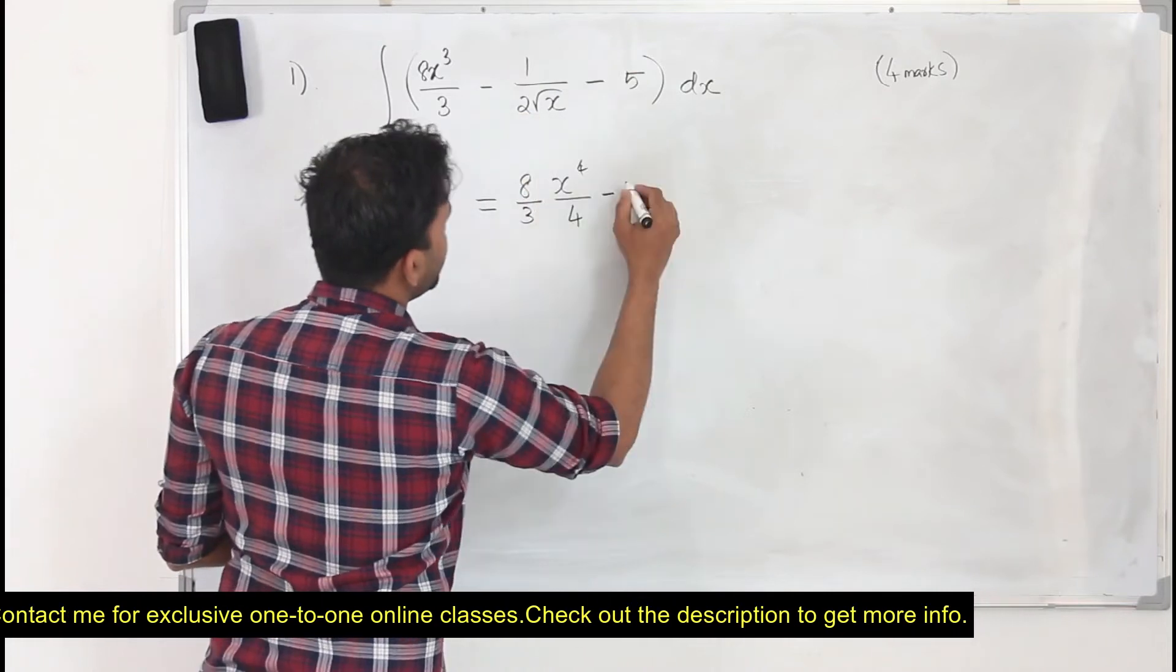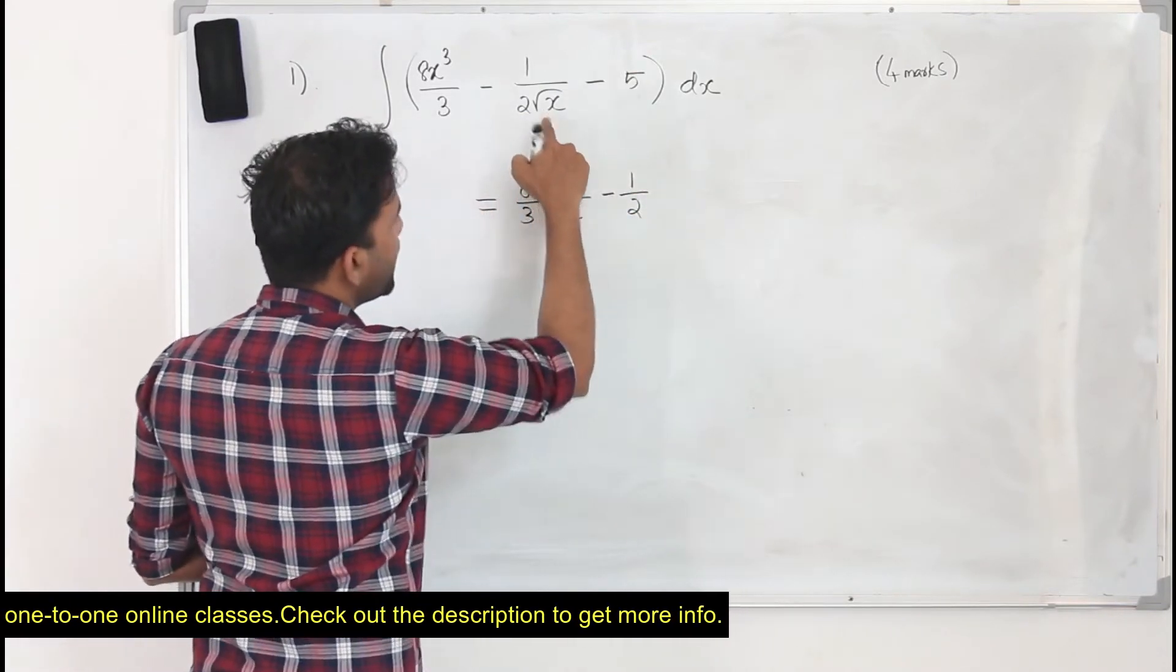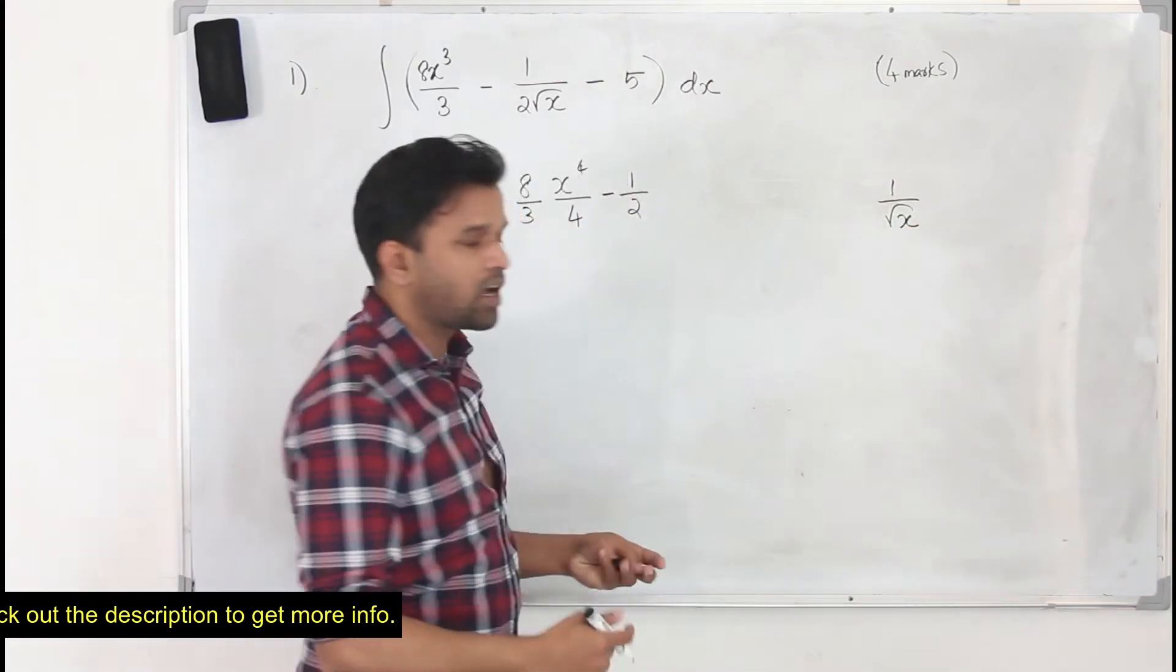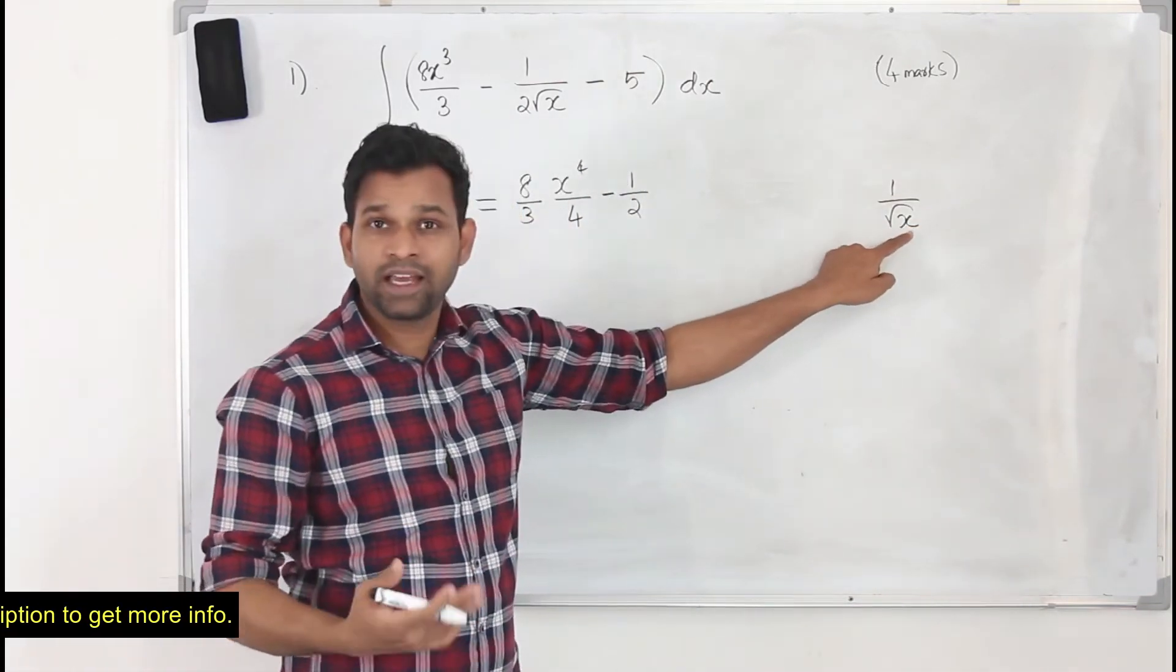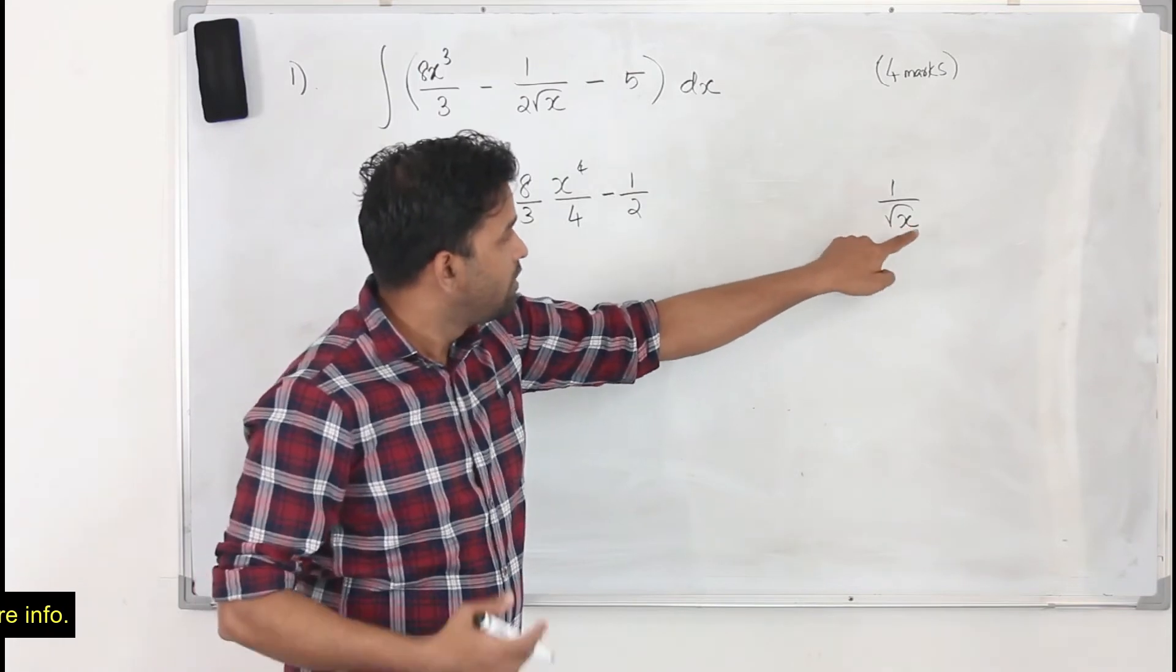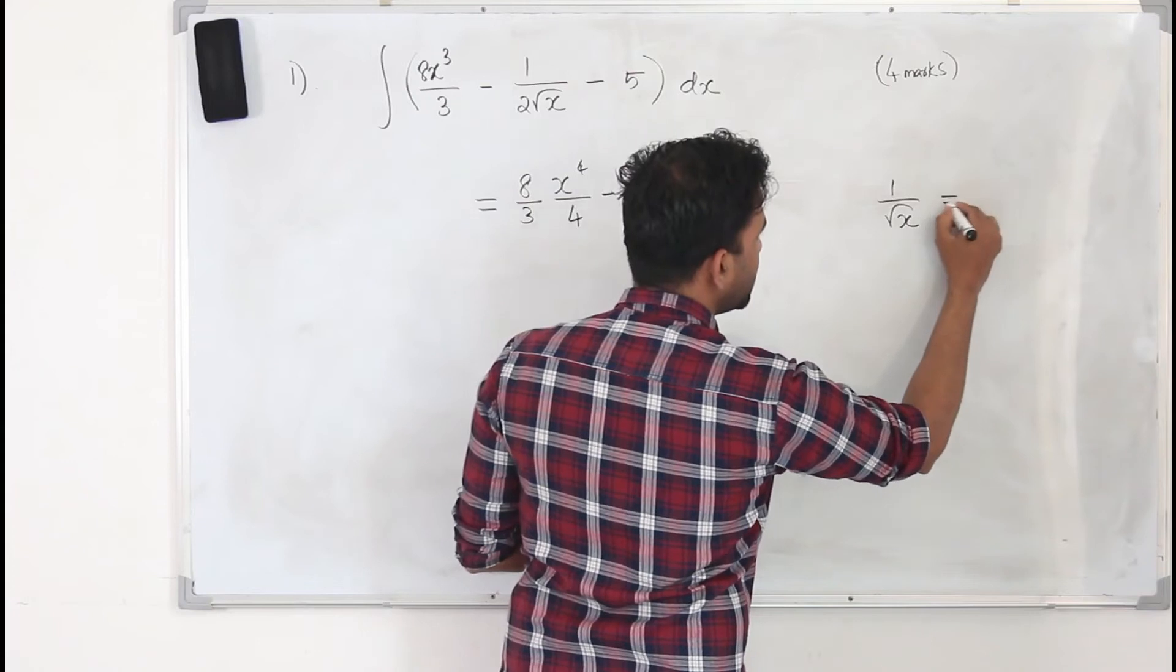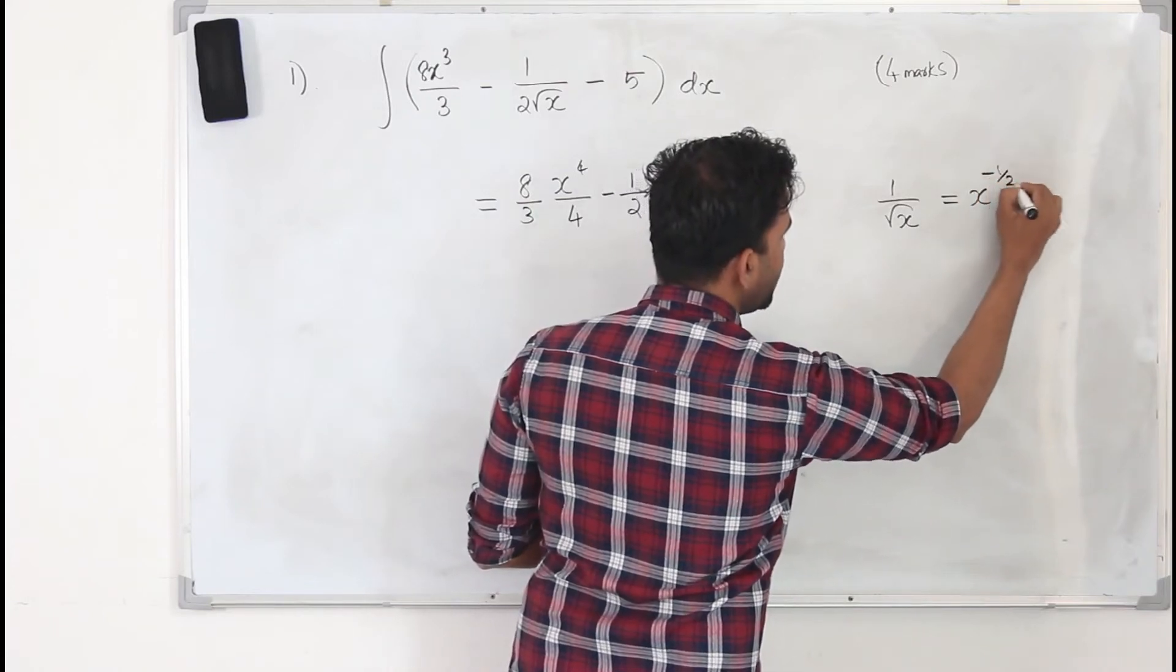Minus. If you want to integrate this, we keep minus 1 by 2 as it is. We have 1 upon square root of x, which equals x to the power 1/2. We use laws of indices. When you bring it to the numerator, it becomes x to the power minus 1/2.